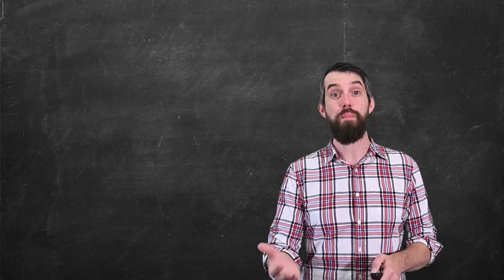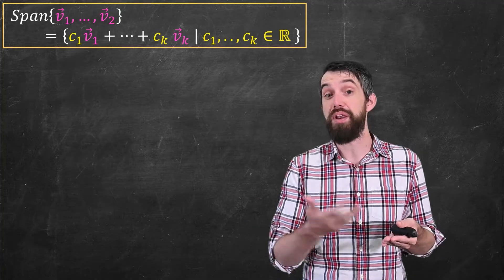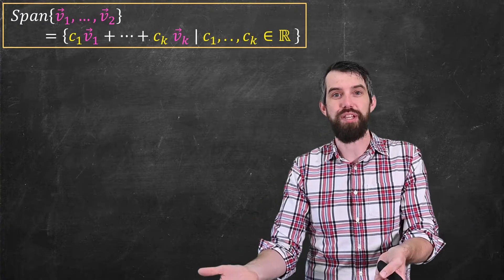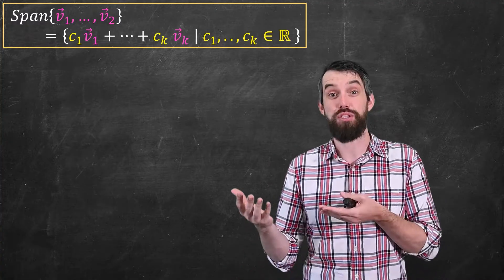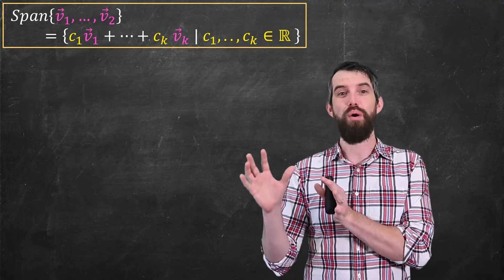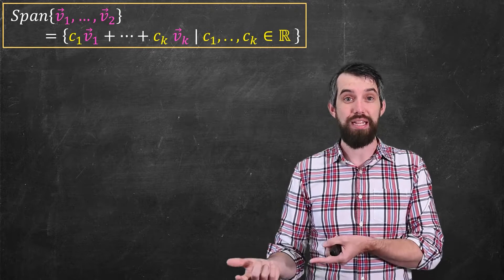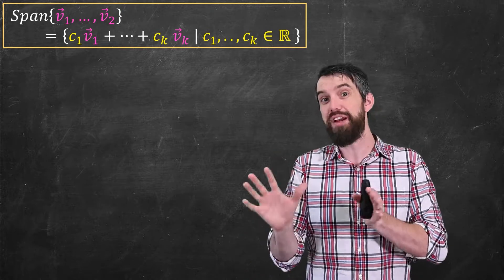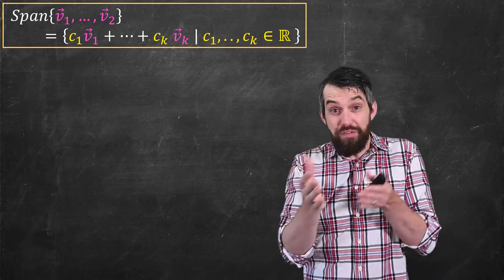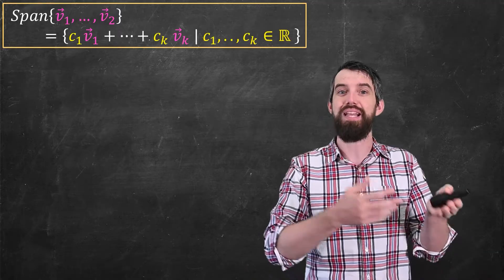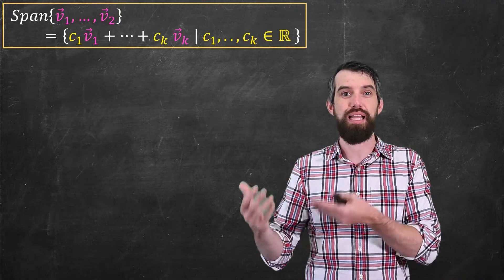That was linear independence. Next, span. Span is defined completely analogously to before: the span of a list of vectors v1 through vk is the set of all linear combinations c1·v1 + ... + ck·vk where the coefficients are real numbers. Many theorems proven previously carry over — for example, the proof that the span is a subspace can be repeated with the exact same arguments for the polynomial vector space.